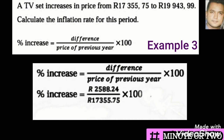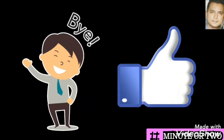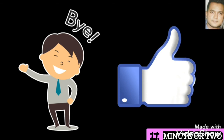We substitute that amount into the formula. The previous amount — the old price — is R17,355.75, which we put into our formula and do our calculations. This finally brings us to 14.91%. Remember, the inflation rate must be written as a percentage.